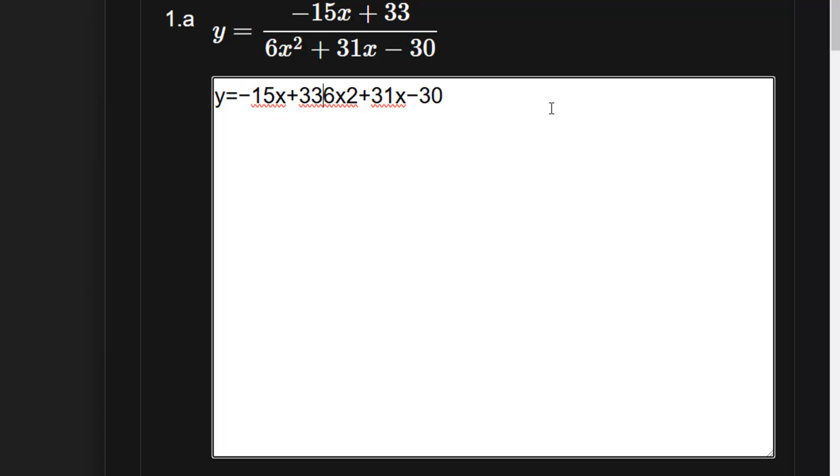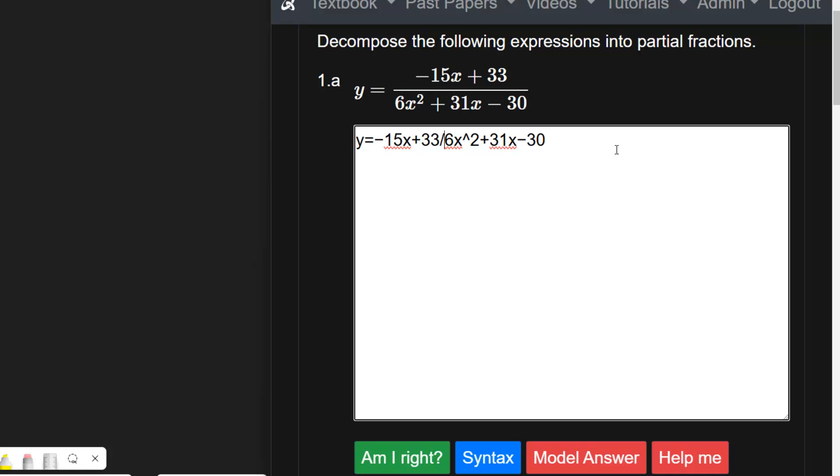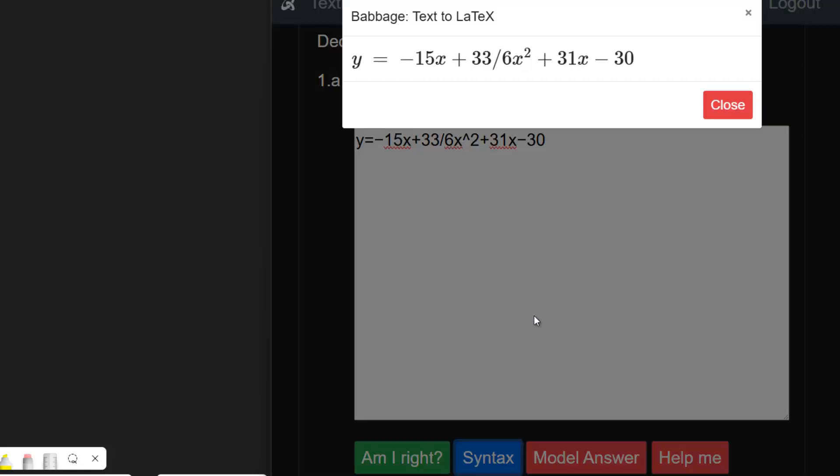We've got 6x squared so that needs to be squared. That's 33 so we put the divide sign in there. But what this would look like if we just have a look at the syntax. It's -15x + 33 divided by 6x² + 31x - 30.